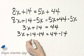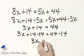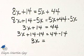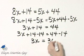Notice what happens. The left side, I have simply 3x. The right side, 44 minus 14, that is 30.